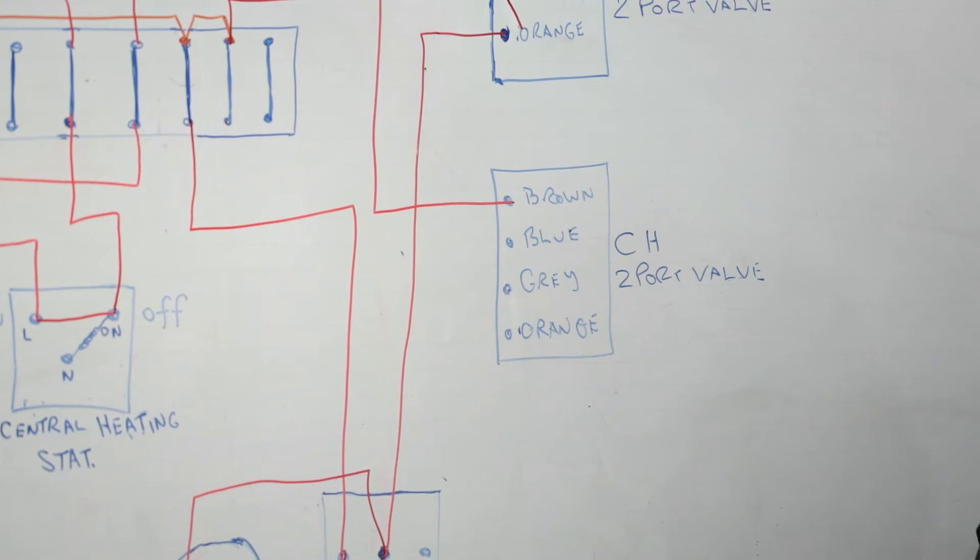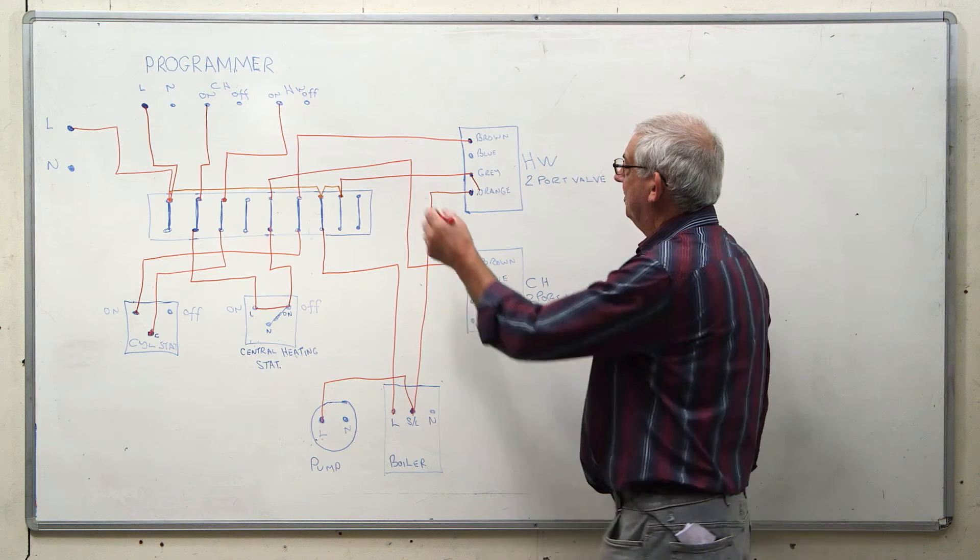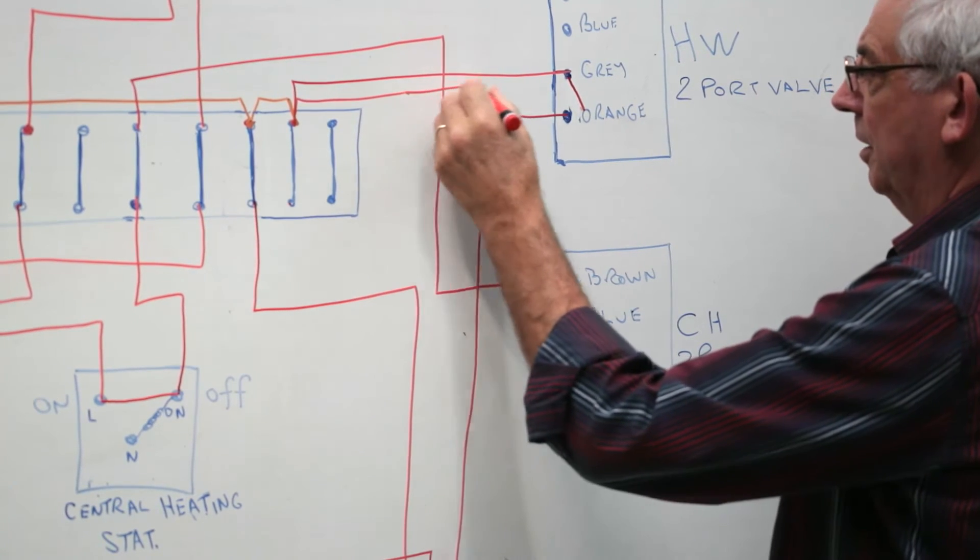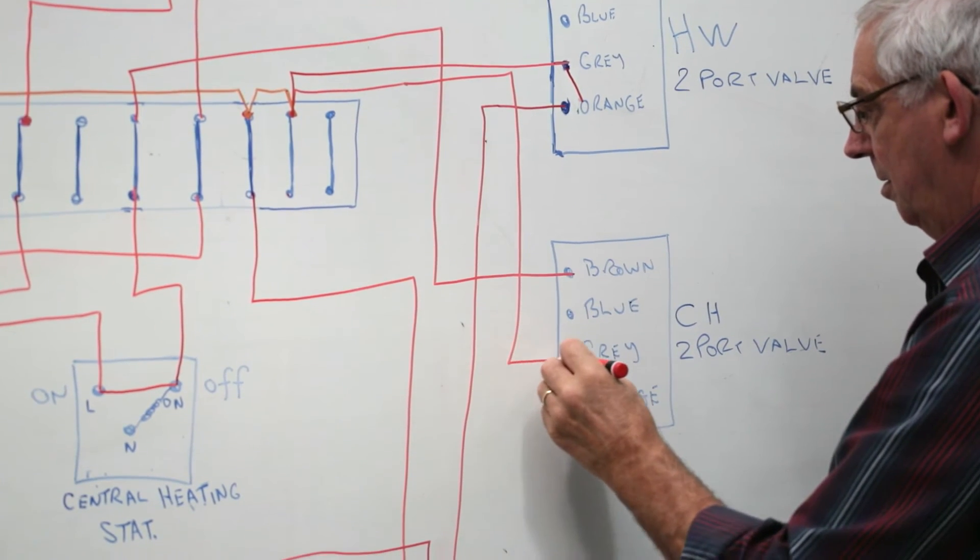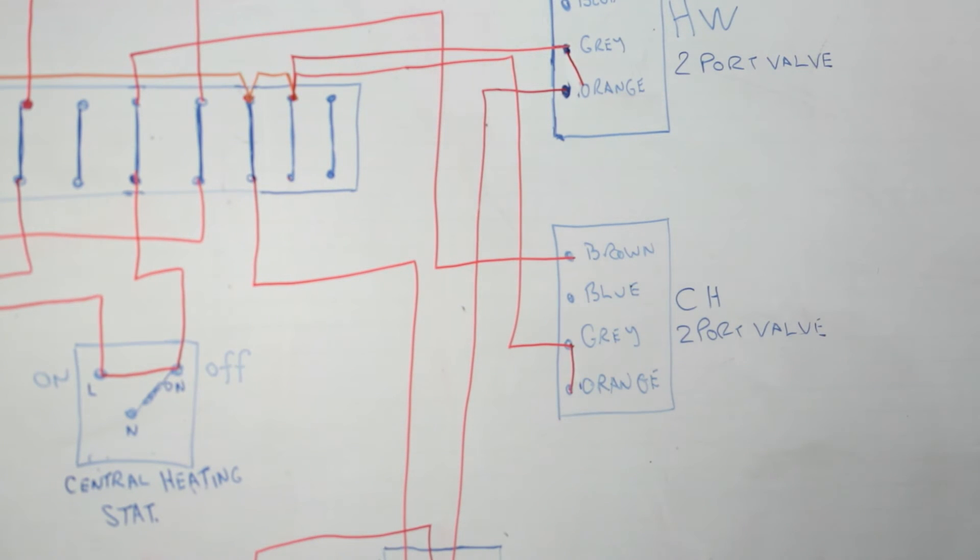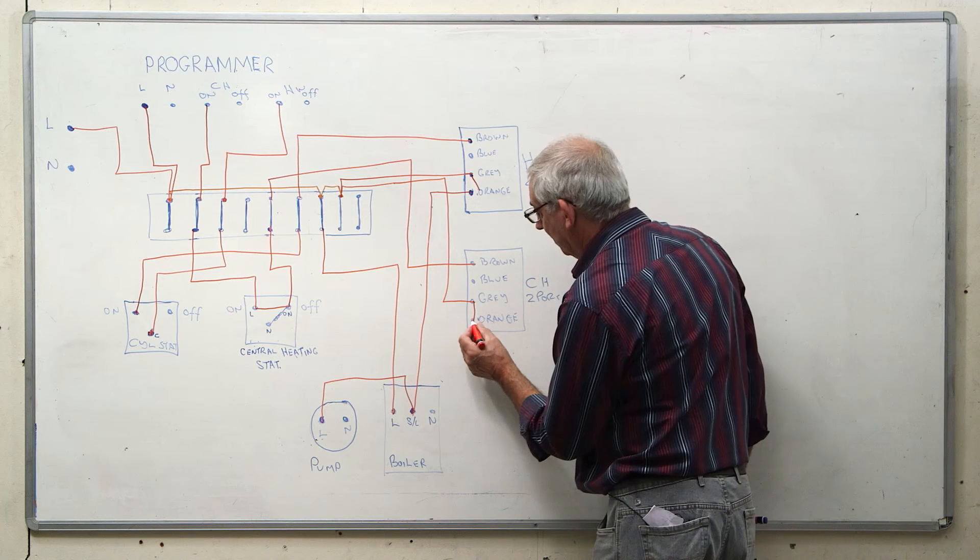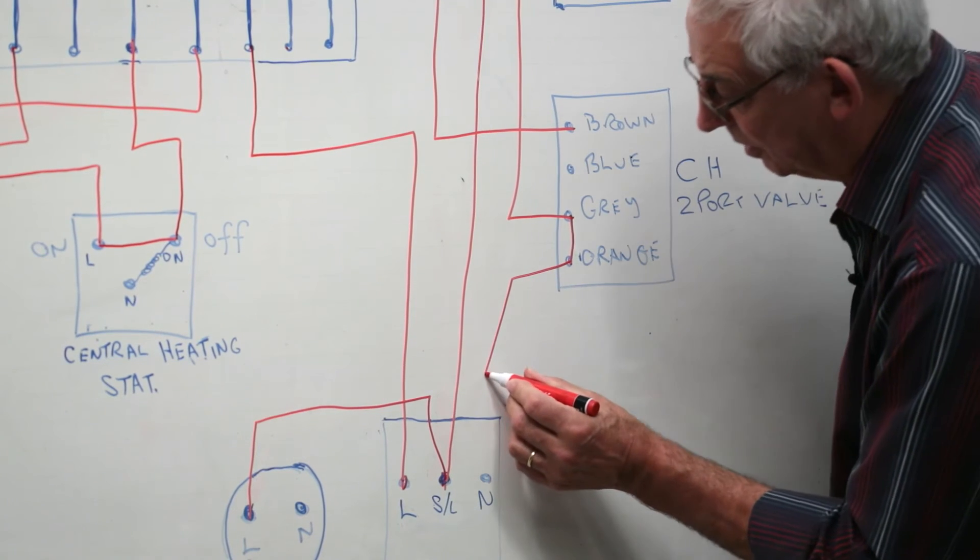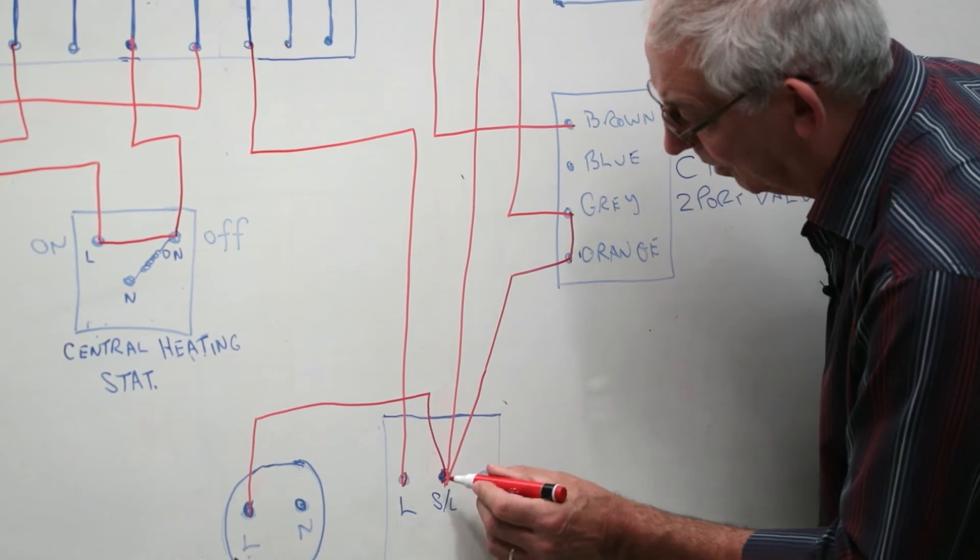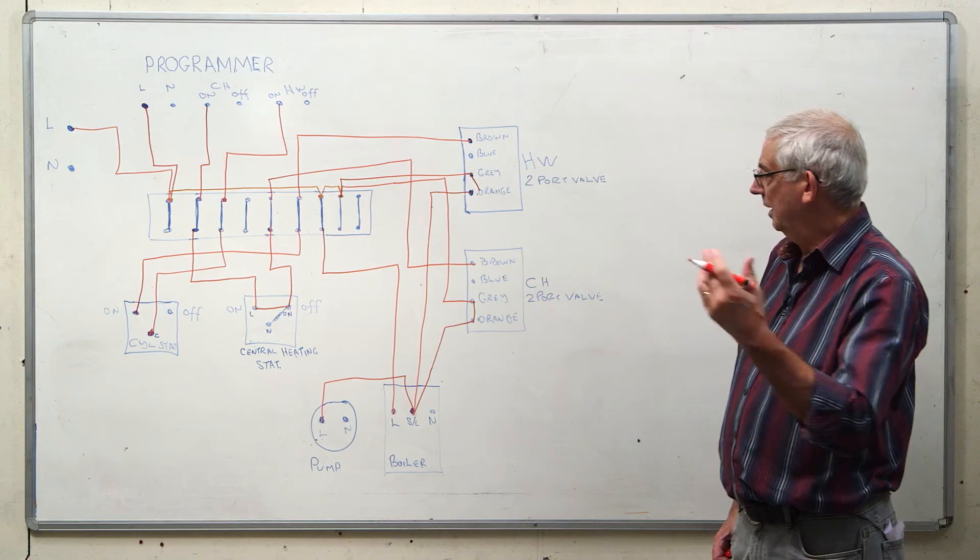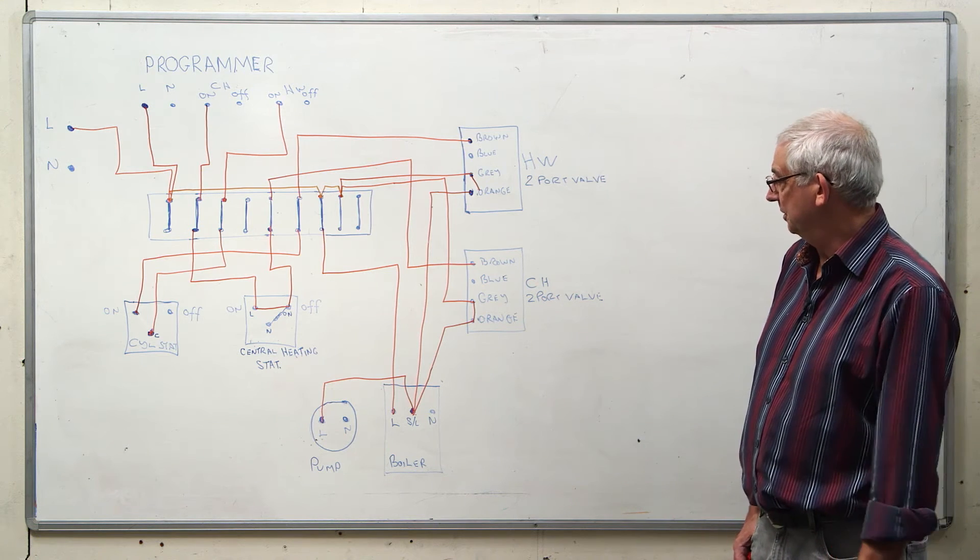The two port valve now opens. I've got a permanent live to the grey here as well. When the two port valve opens, it closes the micro switch to the orange. The orange now sends a signal down to the boiler which of course then sends a signal to the pump and everything works as it should do.